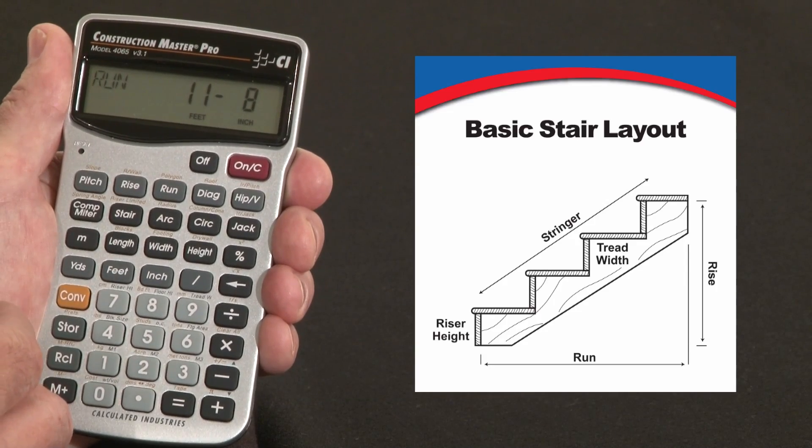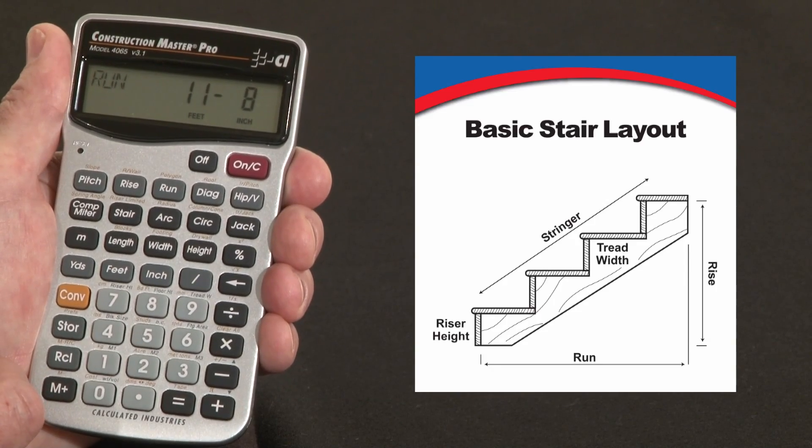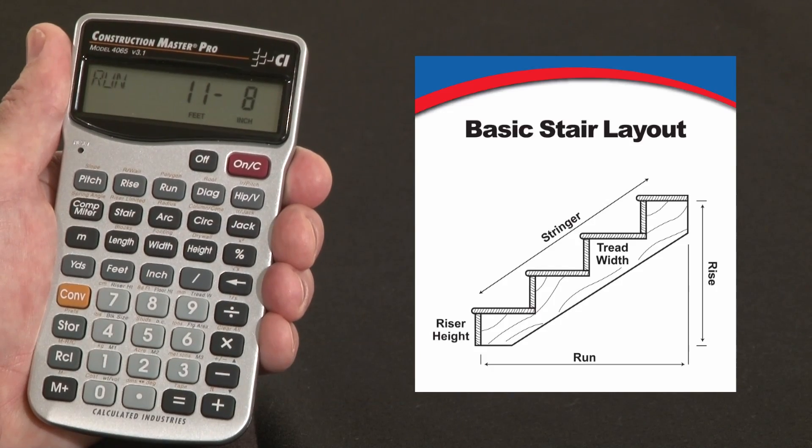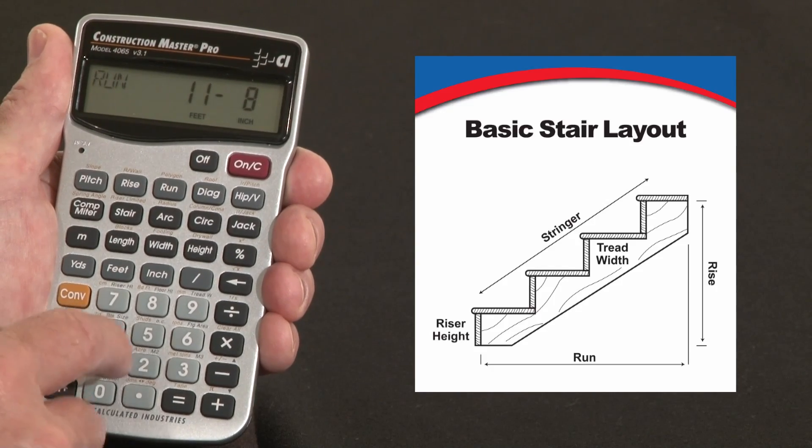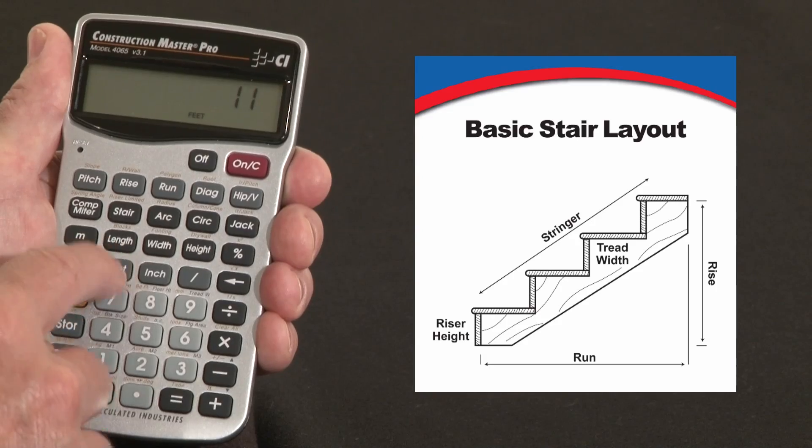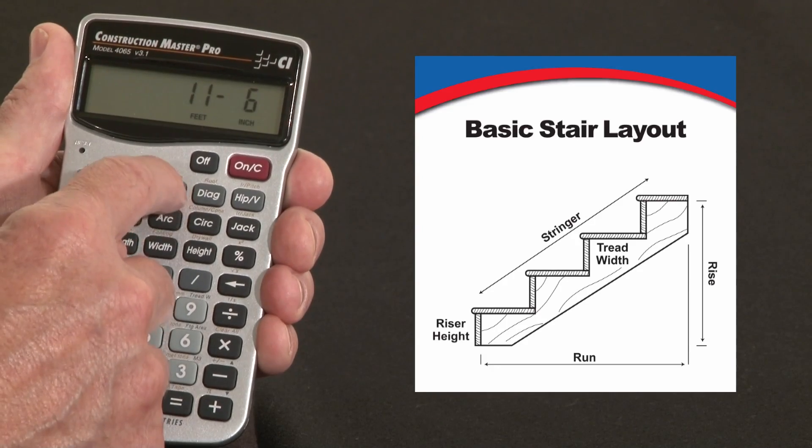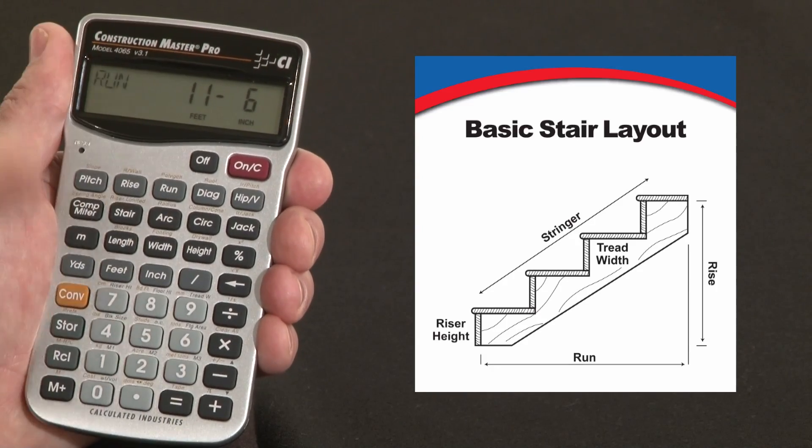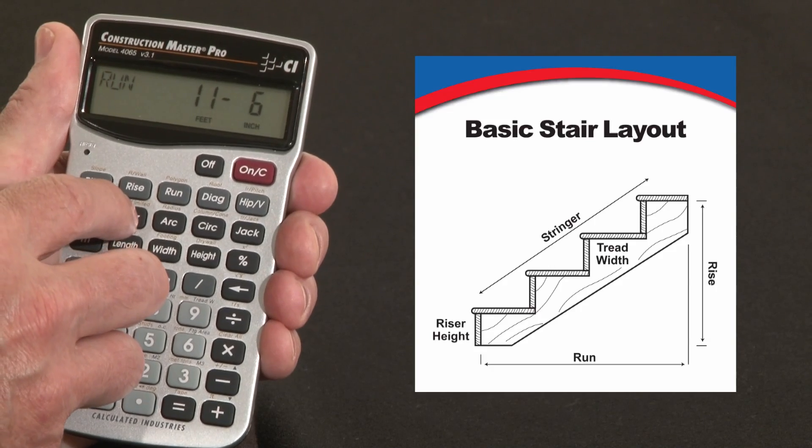Now in another situation, let's say you're building these stairs into a basement, and you'll only have 11 foot 6 inches of horizontal run to work with, so we would put that in by 11 feet 6 inches and call that the run. The floor to floor drop or rise remains the same, so we come back to the stair key.